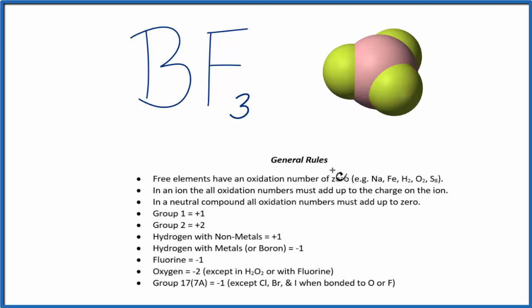So we have these general rules here that help us find oxidation numbers. And as we go down, we can see we don't see boron, but we do see group 17. And fluorine, that's in group 17, that has a minus one as its oxidation number. So each fluorine has an oxidation number of minus one.